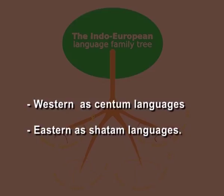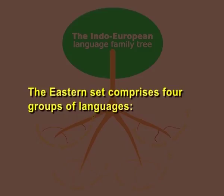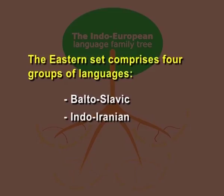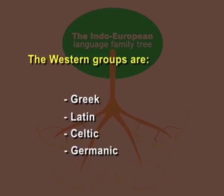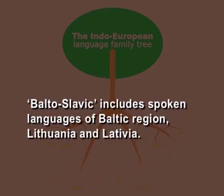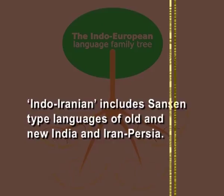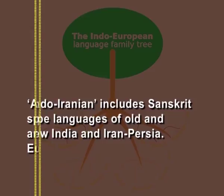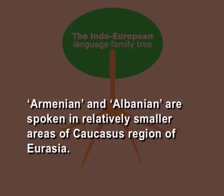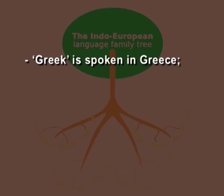The eastern set comprises four groups of languages: Balto-Slavic, Indo-Iranian, Armenian, and Albanian. The western groups are Greek, Latin, Celtic, and Germanic. Balto-Slavic includes spoken languages of the Baltic region — Lithuania and Latvia. Indo-Iranian includes Sanskrit-type languages of old and new India and Iran-Persia. Armenian and Albanian are spoken in relatively smaller areas of the Caucasus region of Eurasia, but they are very distinctive, so they have been given the position of two different languages.